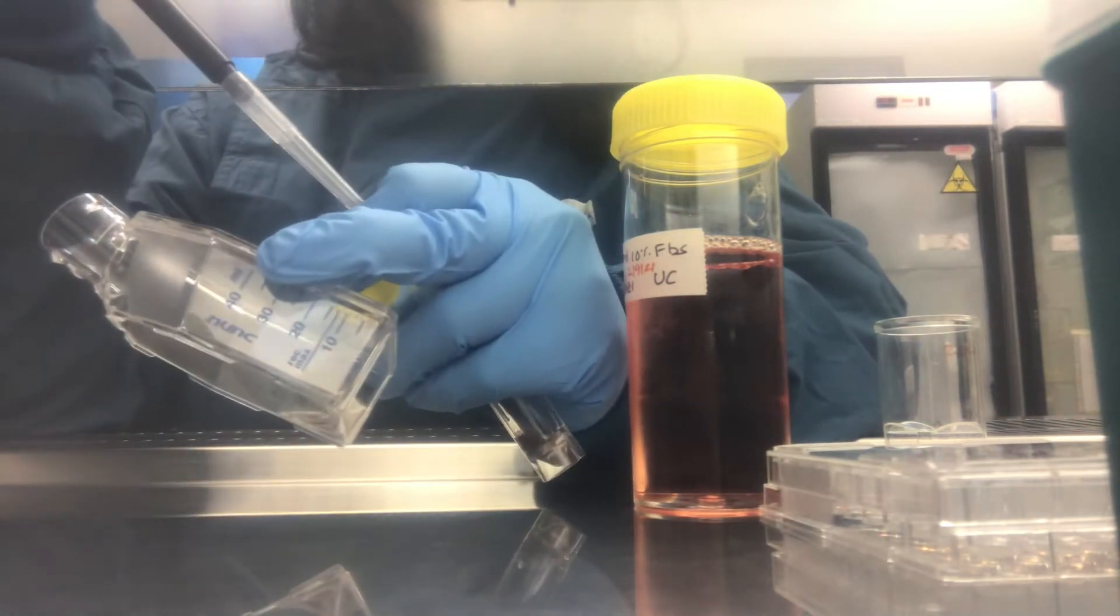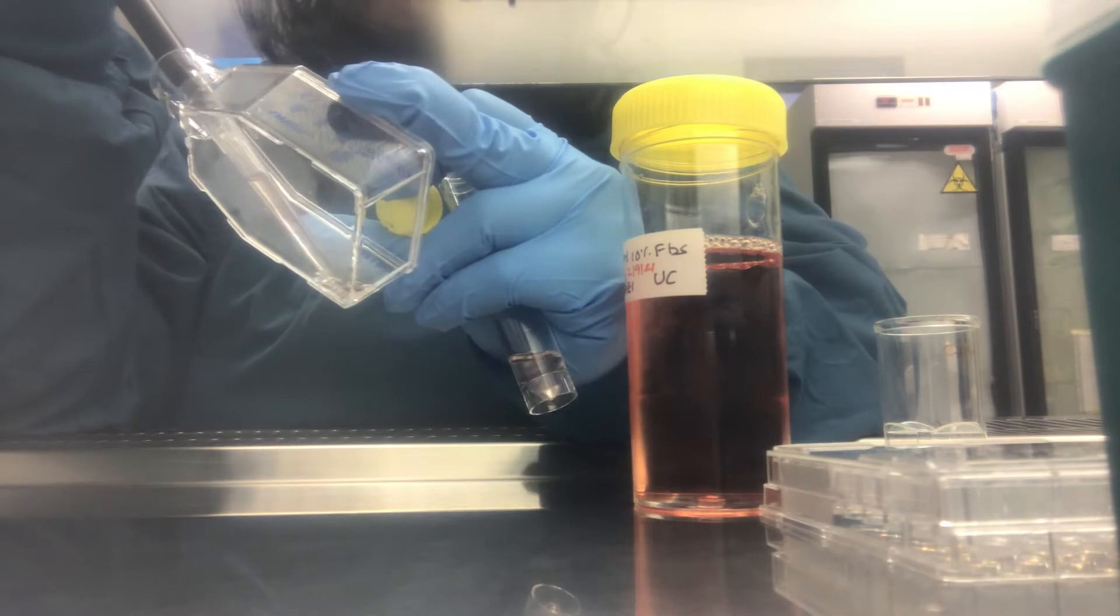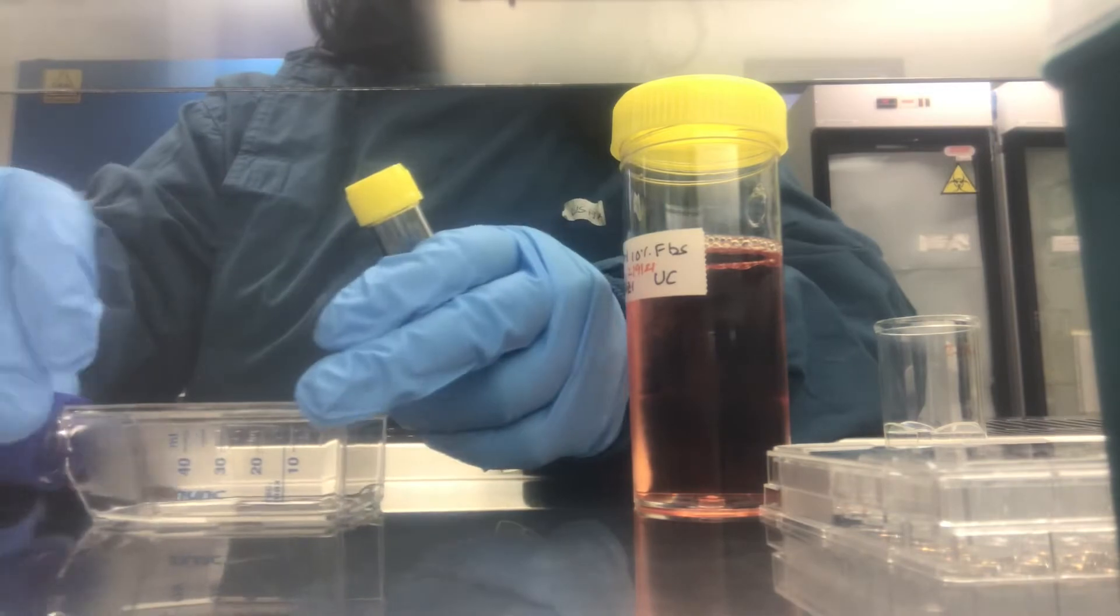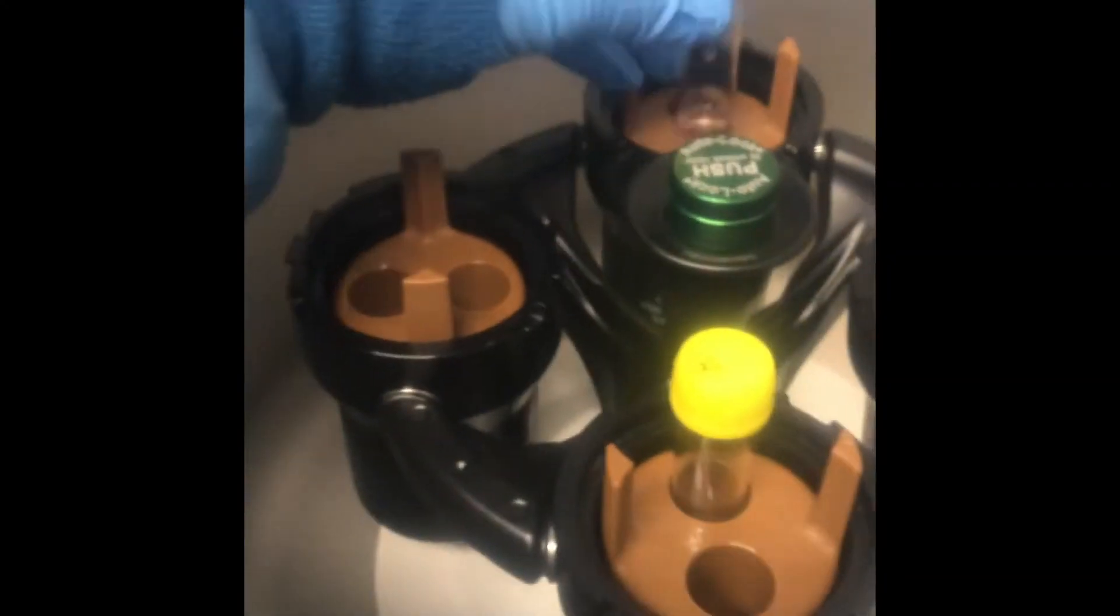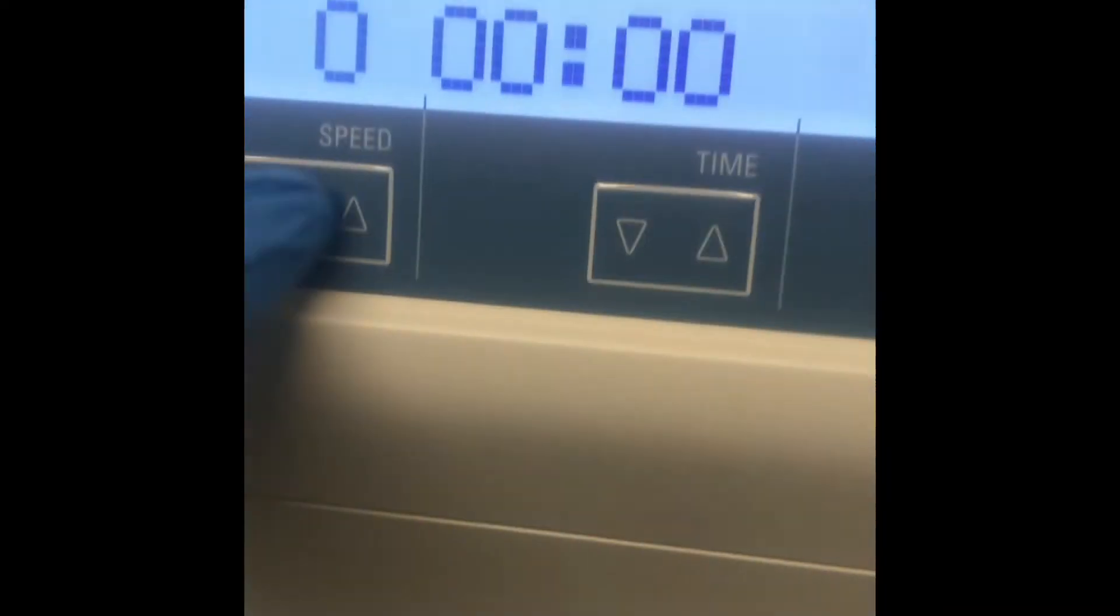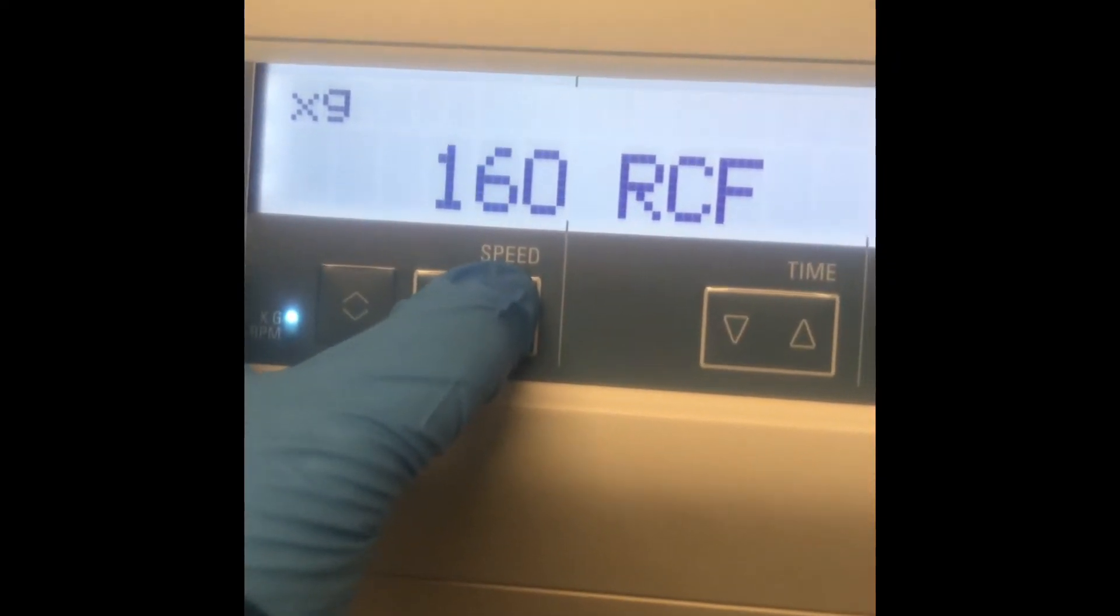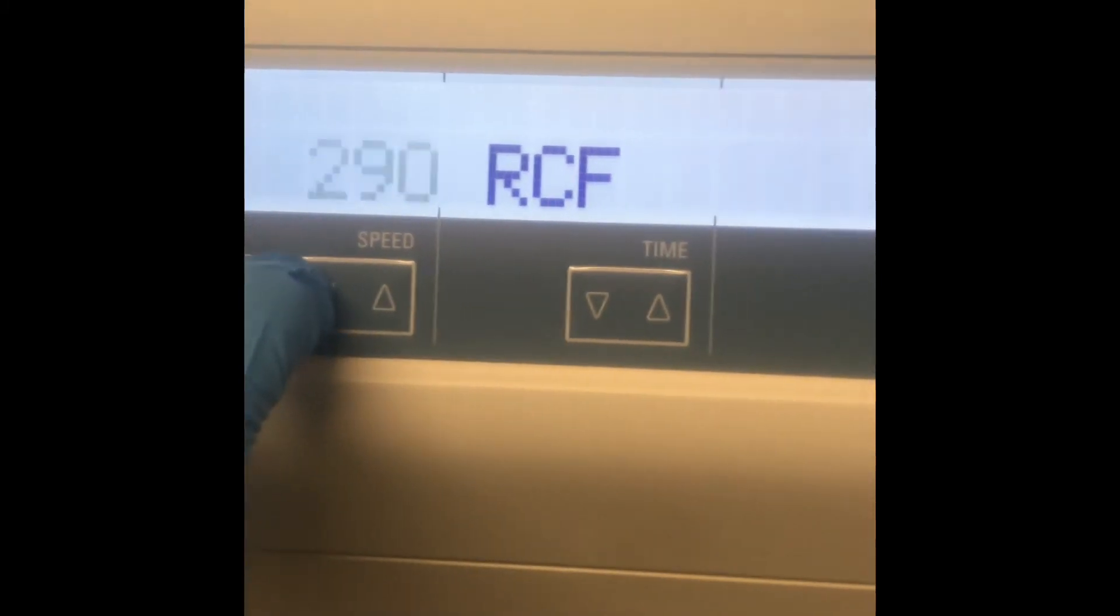The centrifuge I'm using is at 1100 RCF, and you can change according to your cell type. I'm just putting it for four minutes and wait for the pellet.